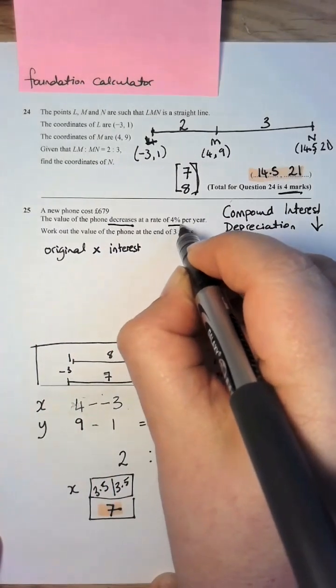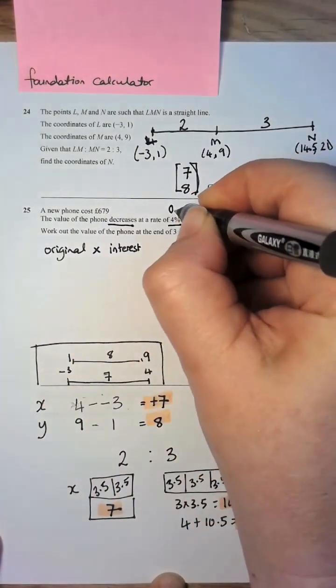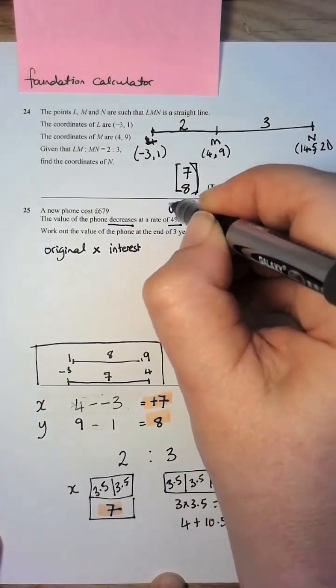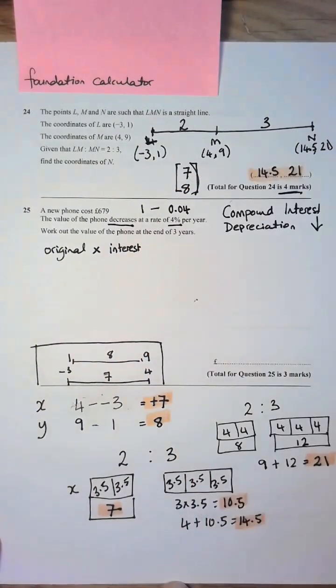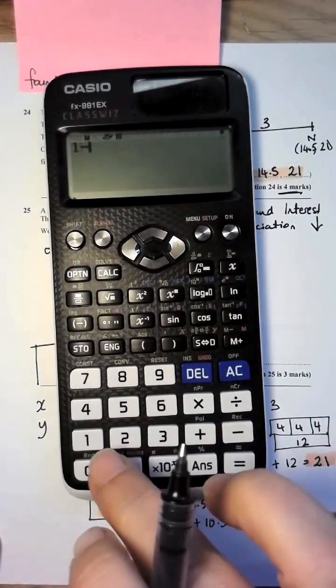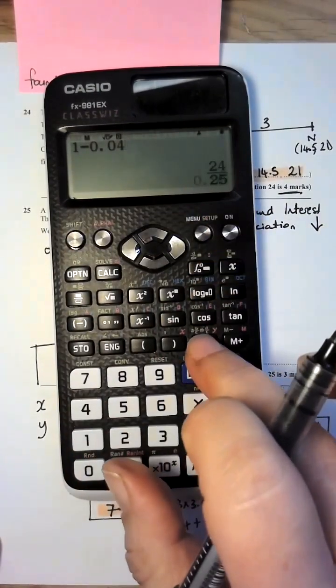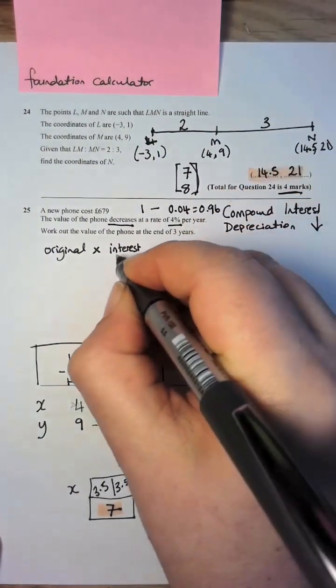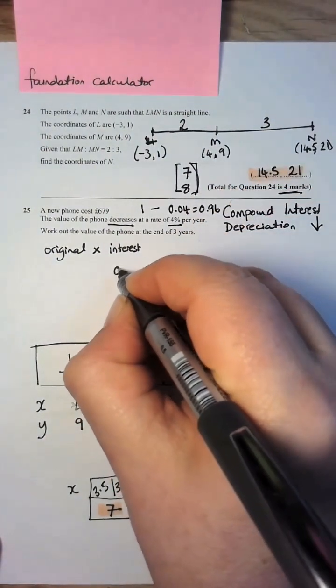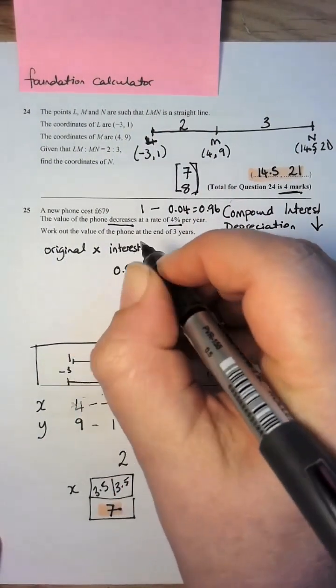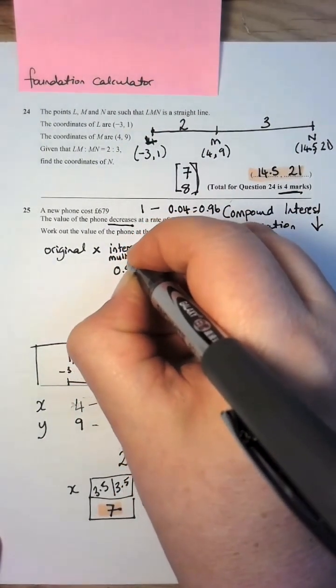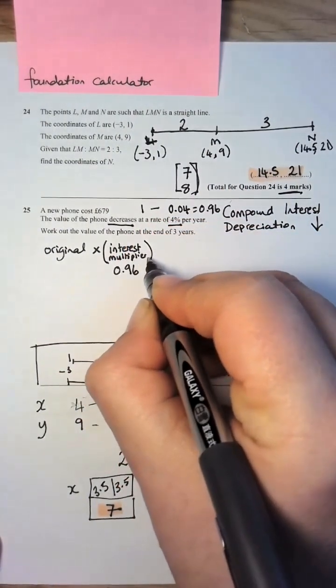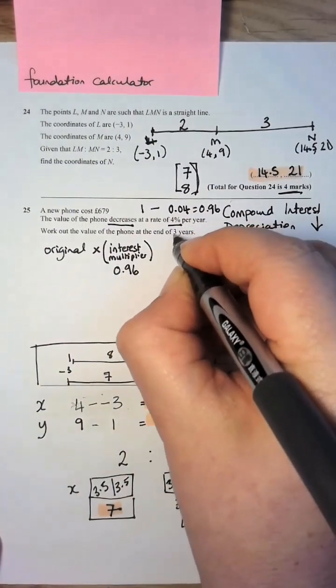So we're looking at 4%, but 4% as a decimal would be 0.04, and what we need to do is we need to take that away from 1, 1 subtract 0.04 equals 0.96, and that is what is going to go in here. I sometimes call it the multiplier.